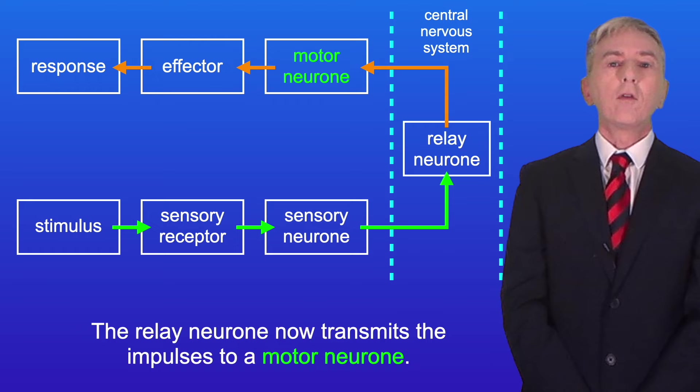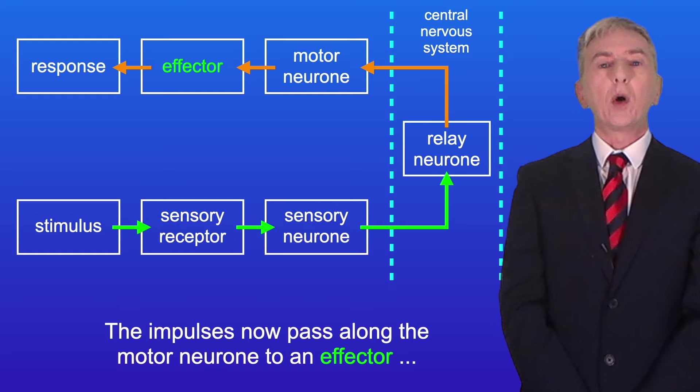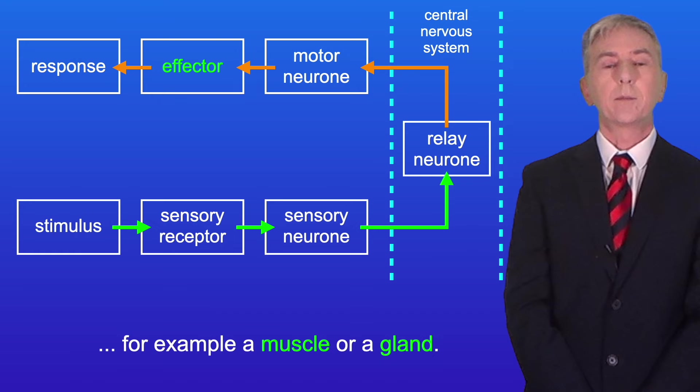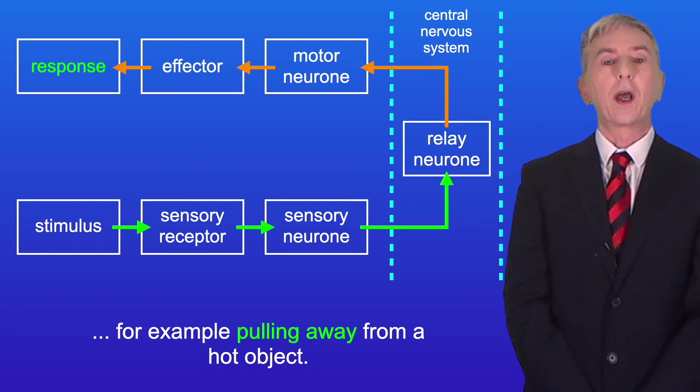The relay neuron transmits the impulses to a motor neuron, and the impulses then pass along the motor neuron to an effector, for example a muscle or a gland. This triggers the effector to carry out a response, for example pulling away from a hot object.